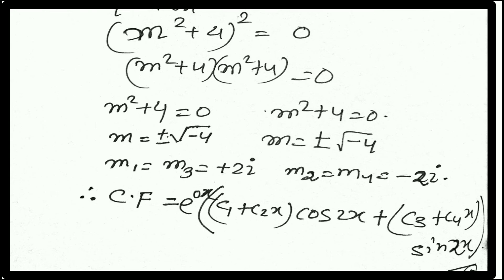So here is the complementary function equal to e^(αx). What does alpha mean here? Alpha is 0. So e^(0x) times (C₁ + C₂x)cos(2x). What does this mean? Here are two roots equal, so C₁ + C₂x.